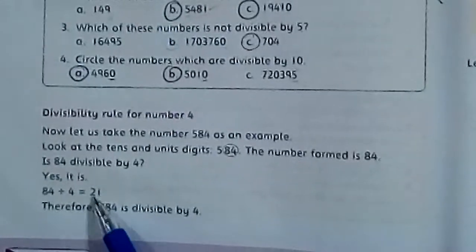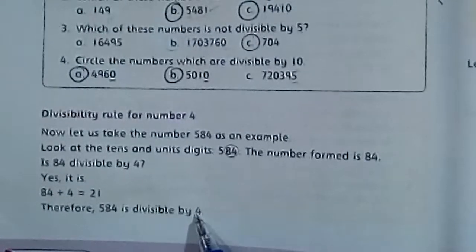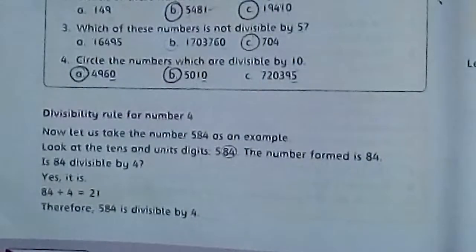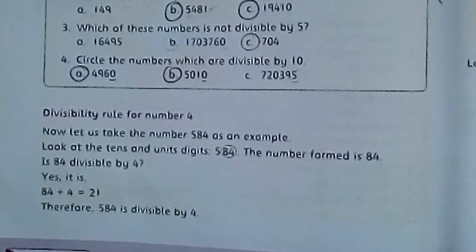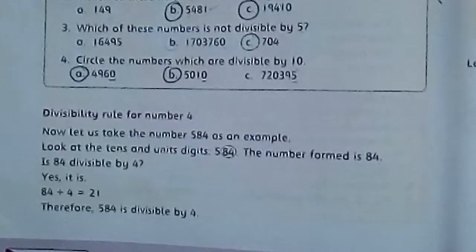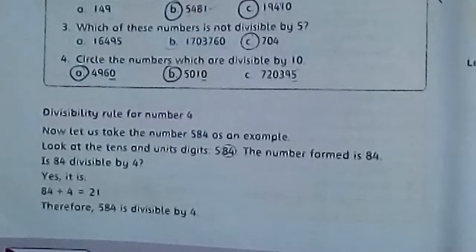84 divided by 4 equals 21. Therefore, 584 is divisible by 4. Students, divisibility rule for number 4 ke liye aap ke paas kya condition hai ke agar aap ke last two digits divisible by 4 honge to it means ke pura number divisible by 4 consider ho ga.